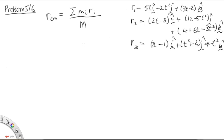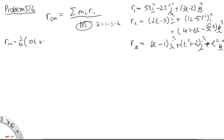Let's work out the radius of the center of mass. We consider the i, j, and k components separately. The total mass m is 2 plus 1 plus 3, which is 6. So r for the center of mass equals 1/6 times: in the i direction, 2 times 5t gives 10t, plus 2t minus 3, plus 3 times (6t minus 3) which is 18t minus 9. Then in the j direction, we have 2 times minus 2t² giving minus 4t², plus 12 minus 5t², plus 3 times the j component.